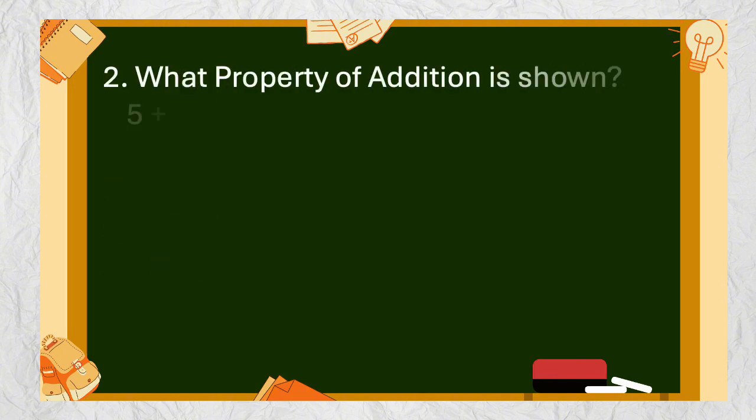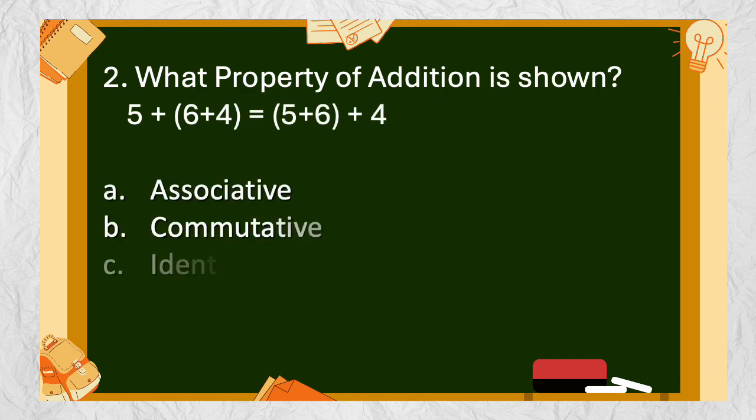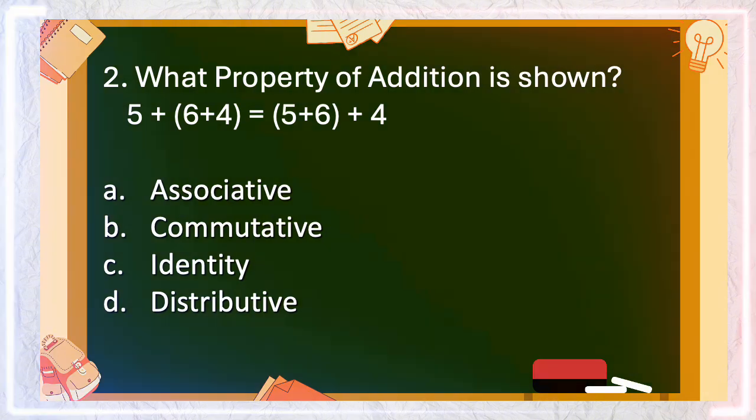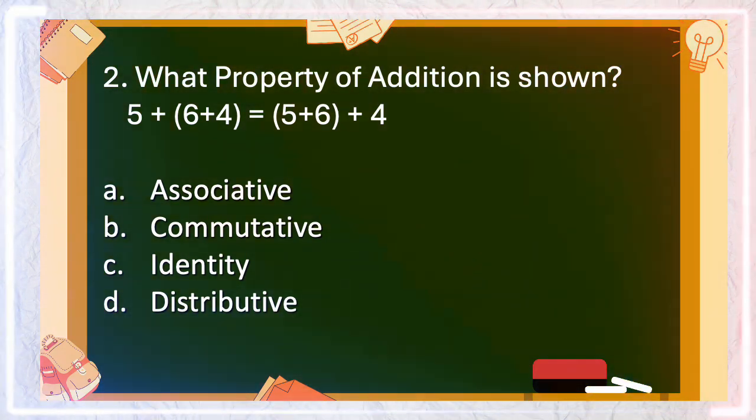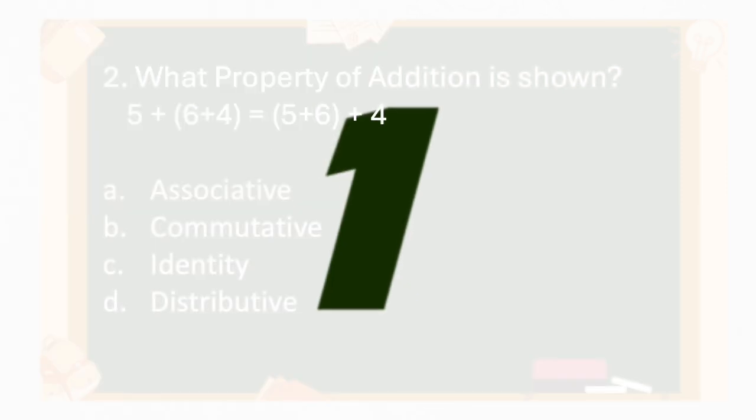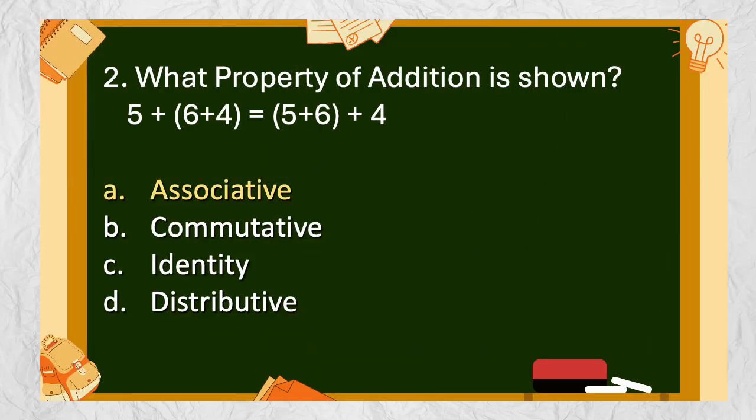Number 2: What property of addition is shown? 5 + (6+4) = (5+6) + 4. A. Associative, B. Commutative, C. Identity, D. Distributive. The answer is letter A. Associative.